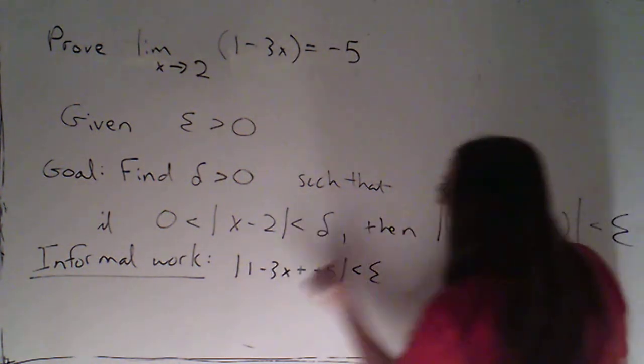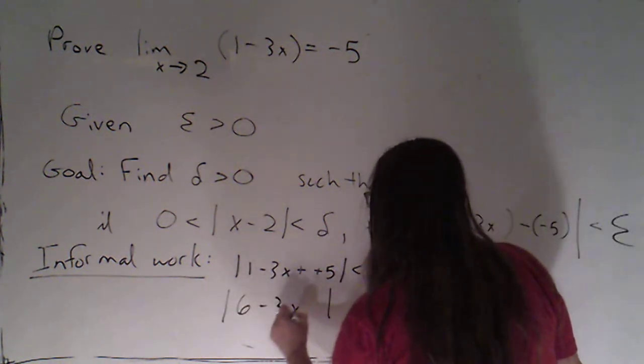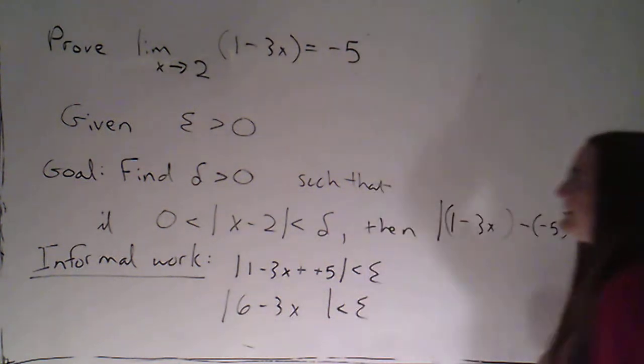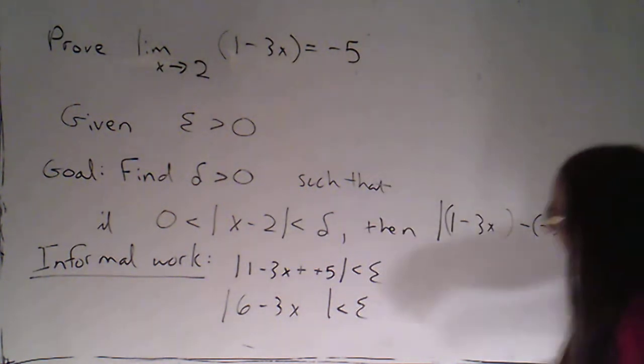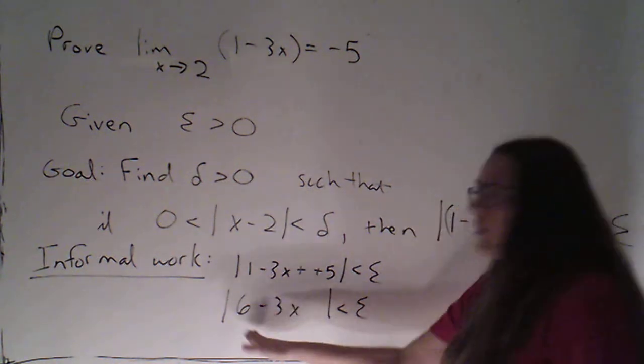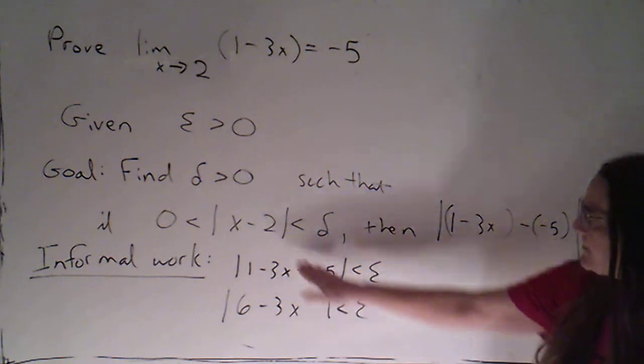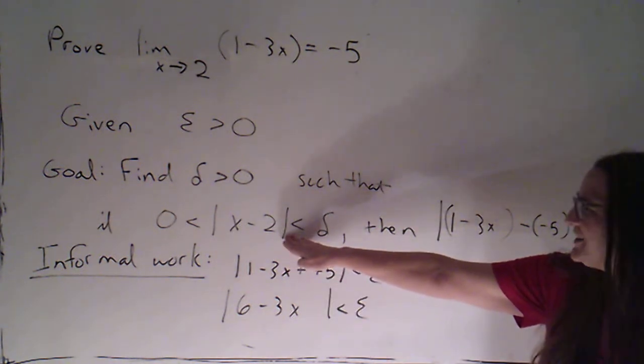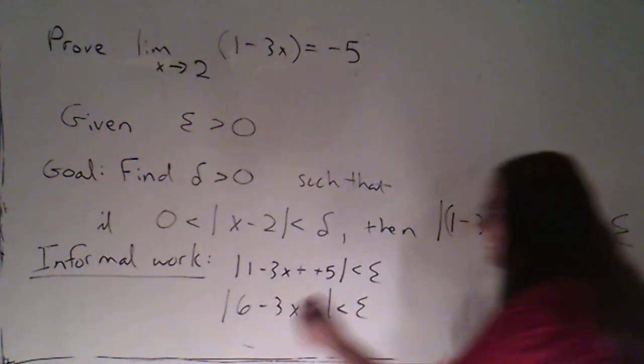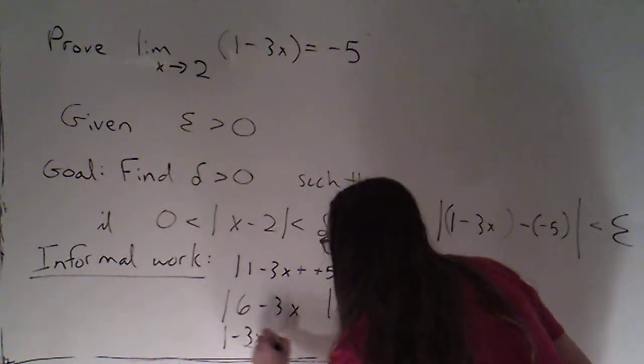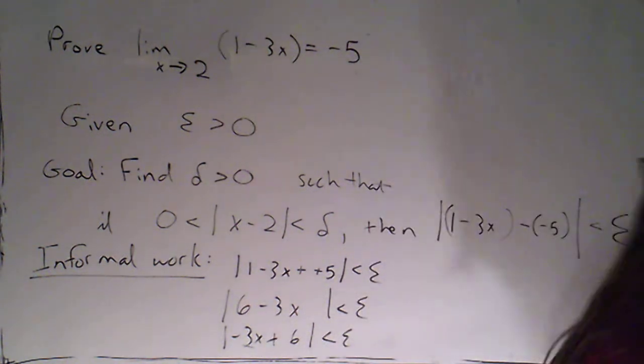Now, of course, minus and negative is just plus. So that becomes the absolute value of 6 minus 3x less than epsilon. And I think I'm going to just swap the order of those things, simply because if I look at where I'm going, I'm trying to get to an inequality that involves an x minus 2. That has the x first and then the number. So I'm just going to rewrite this as negative 3x plus 6 in the absolute values being less than epsilon.